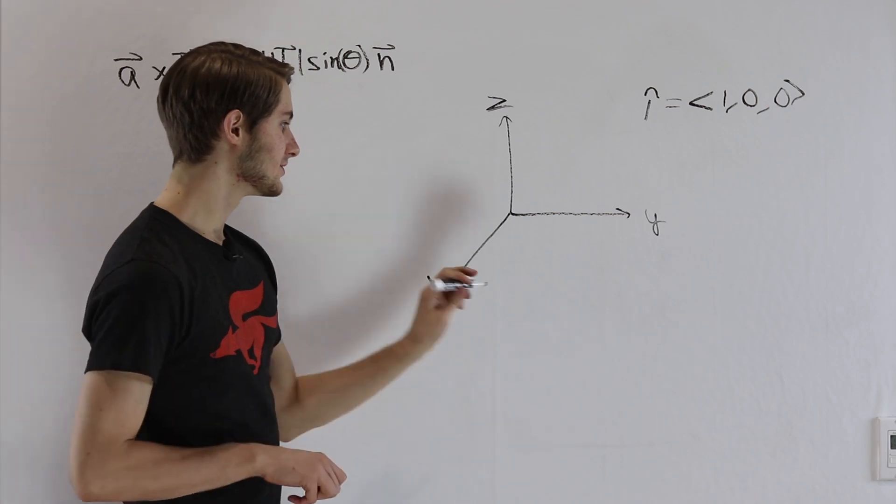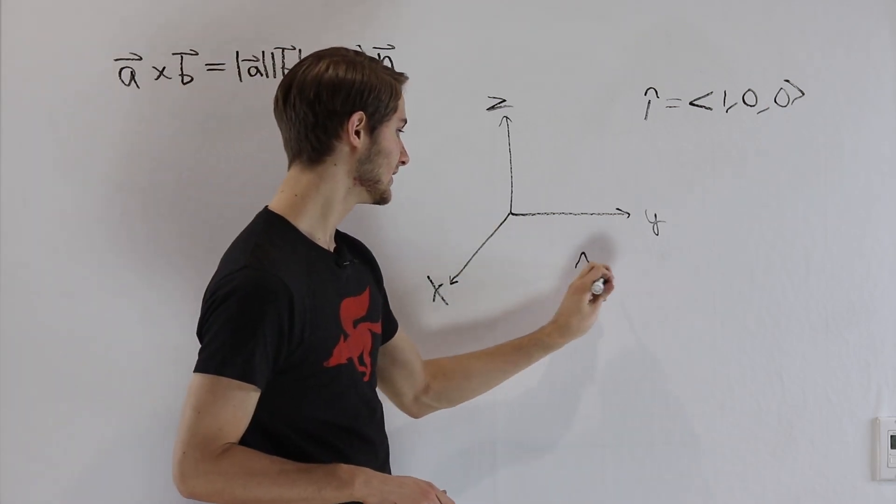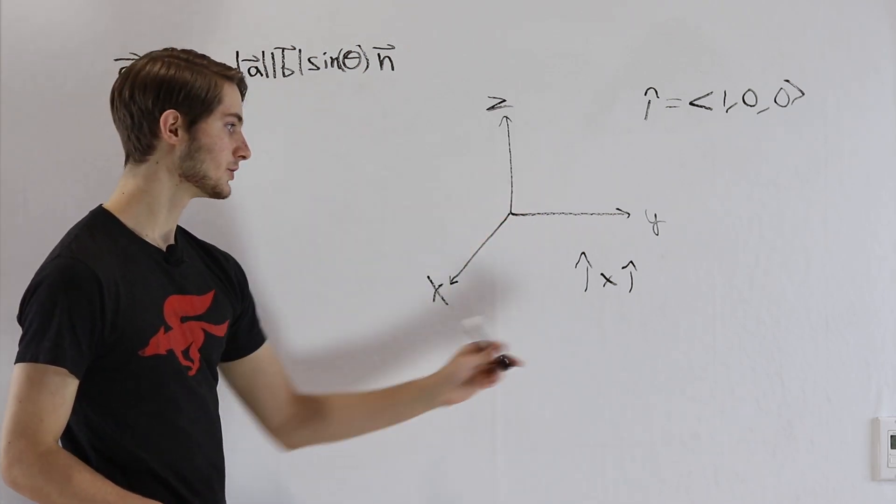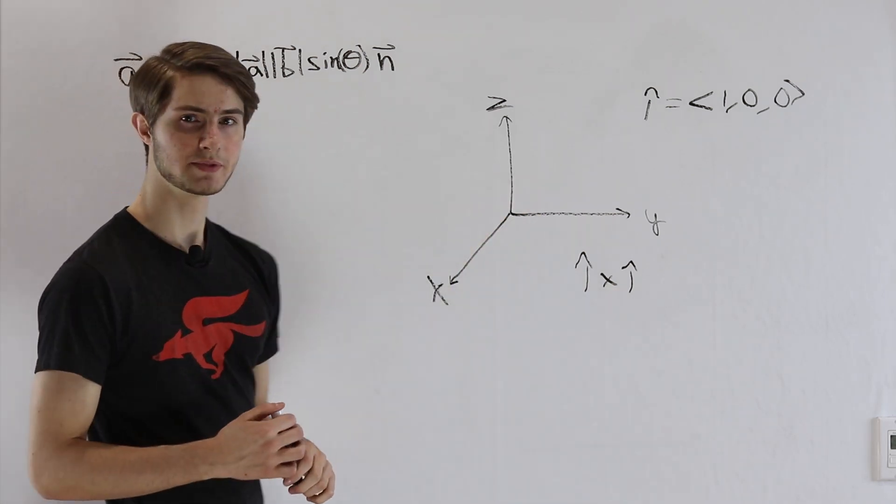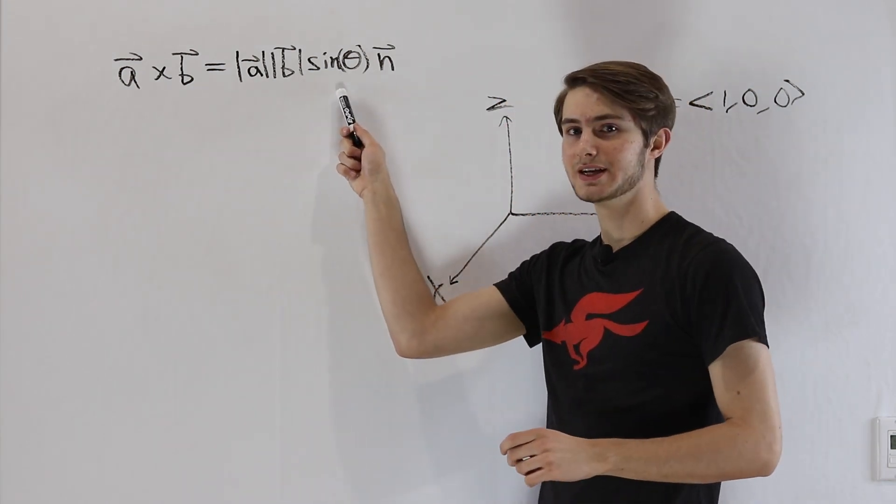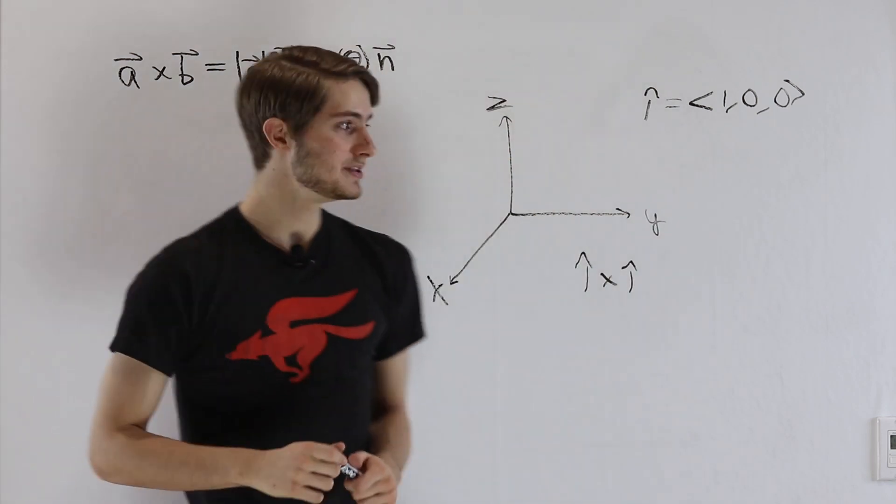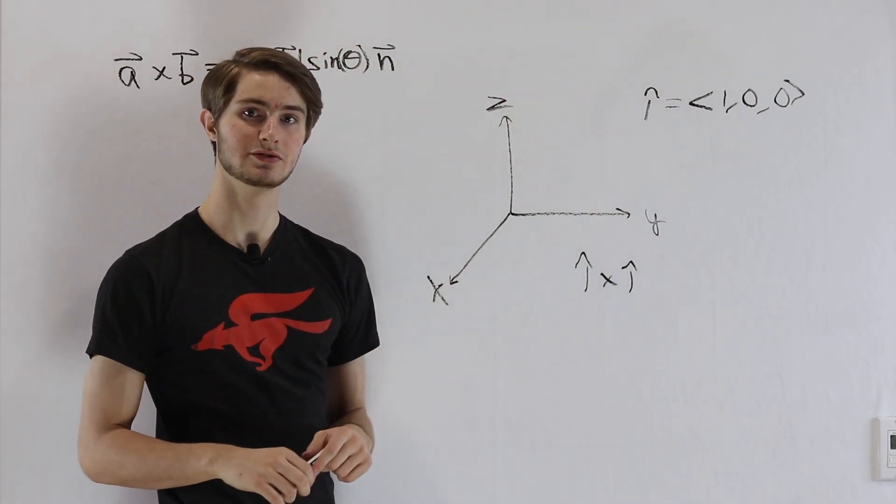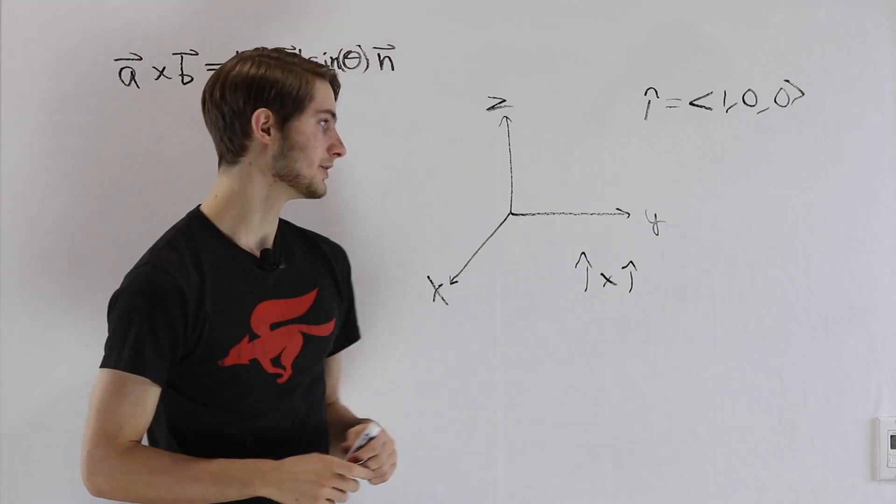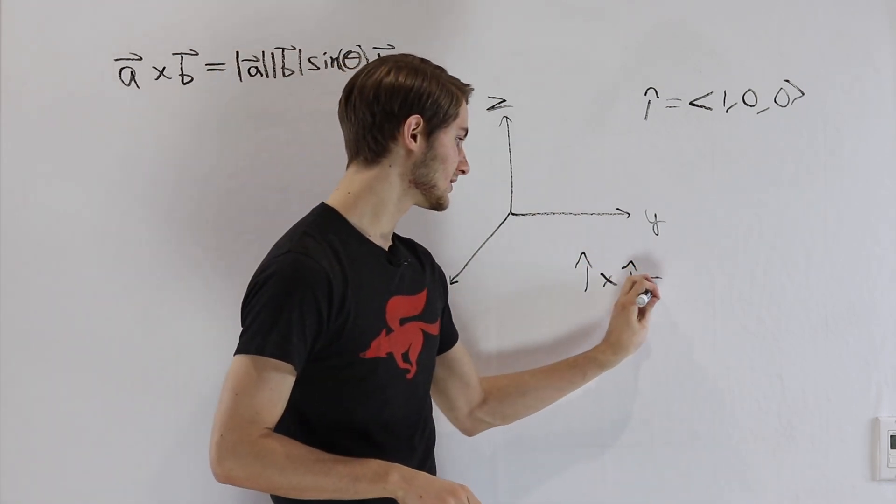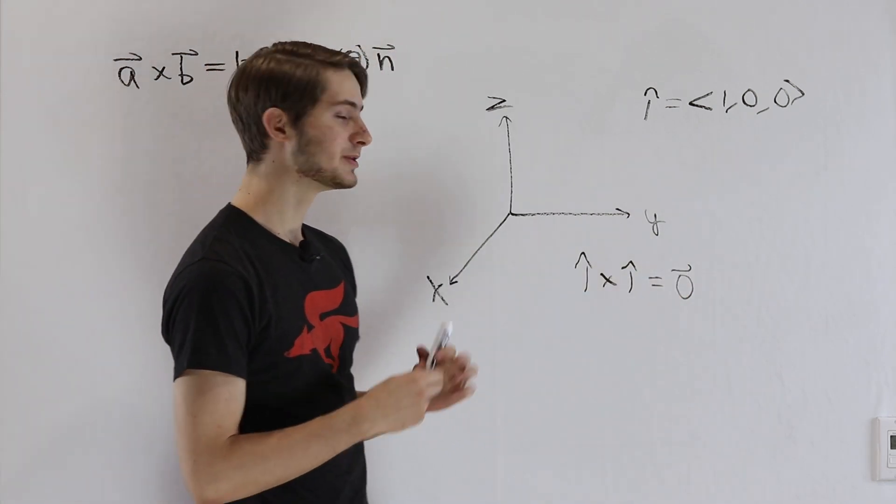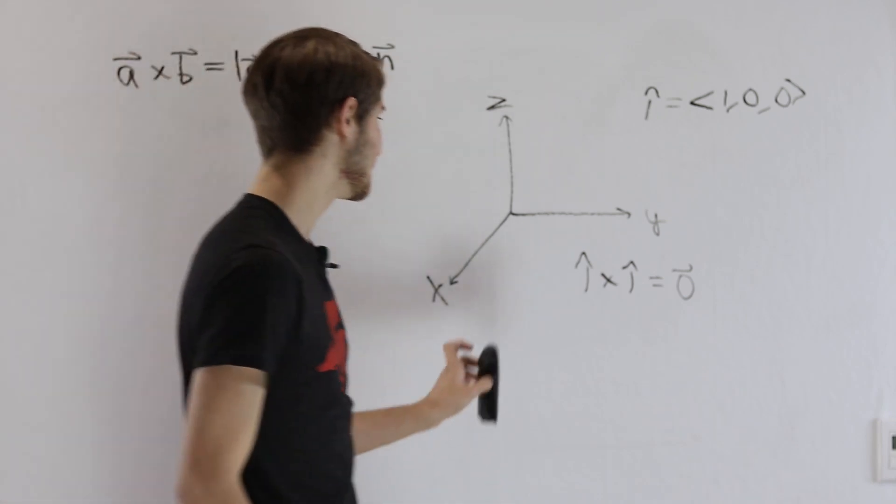Let's think about what happens if we take i hat crossed with itself. So we have our x direction vector crossed with our x direction vector. What will we get in this formula? Well, first of all, we have to look at the sine of theta. What's the sine of the angle between a vector and itself? Well, that angle is just going to be 0 degrees, and the sine of 0 degrees is 0, meaning that i hat cross i hat is just going to be the 0 vector. And that's going to apply to any vector when we cross it with itself.